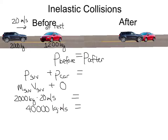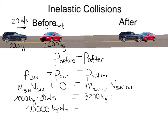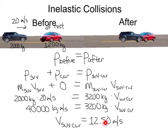That 40,000 kilogram meters per second also has to be the momentum after they collide. After the collision they move as one object, since they're stuck together in an inelastic collision. Their combined momentum is the mass of the SUV and car together times their combined velocity. The total mass is 2,000 plus 1,200, which is 3,200 kilograms. So 40,000 equals 3,200 times V. Dividing both sides by 3,200 gives a velocity of 12.5 meters per second.